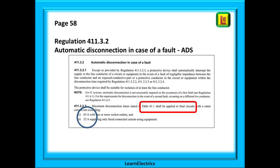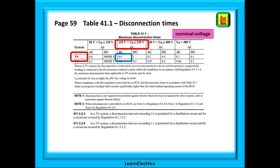The red box here tells us that table 41.1 on the next page only applies to final circuits — we have a separate video on final and distribution circuits, with details and links in the video description. It also tells us that it only applies to circuits up to a certain size of amps, as shown in the blue circle. So let's assume that our circuit is a final circuit rated below the amp limits specified. Table 41.1 will tell us the maximum disconnection time for safety for different nominal voltages and for different earthing systems. Nominal voltage is the name we give to the voltage, not what we actually measure.